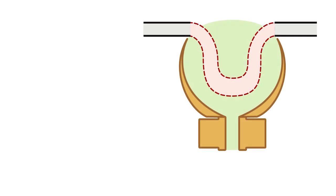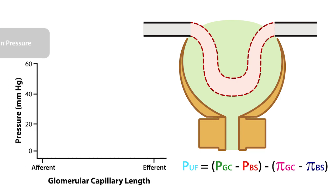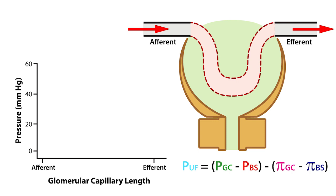There are four main forces involved in the formation of the glomerular ultrafiltrate. Together, they are referred to as the net ultrafiltration pressure, which is abbreviated as PUF. As we describe each force, we'll plot the pressure generated across the length of the glomerular capillary, starting with the afferent side where plasma enters and ending on the efferent side where plasma exits.